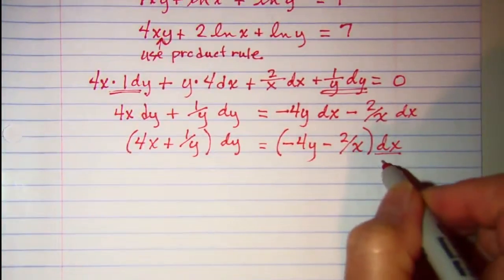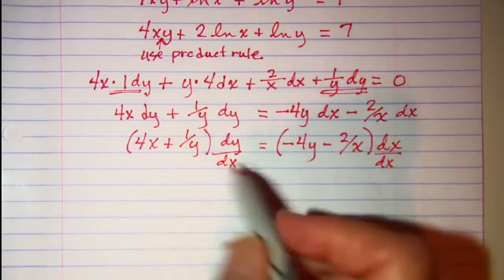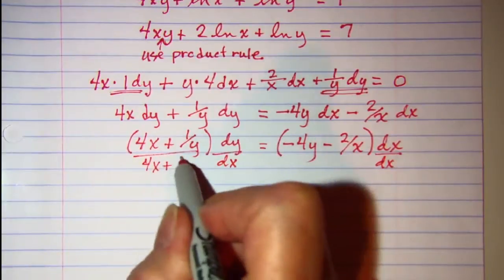Divide both sides by dx and then divide by 4x plus 1 over y.